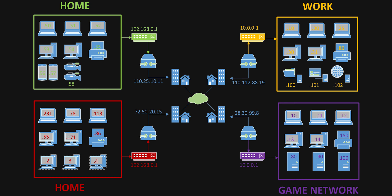Looking at the home network, we've also got a lot going on — smart devices, printers, laptops, desktops, and surveillance cameras, which people are putting in their homes more and more. Our surveillance cameras are on 192.168.0.50, so I'd set up a port forwarding rule in my router forwarding port 4000 to 192.168.0.58 on port 4000. So if I was at work and wanted to check my cameras and see what's going on in my front yard, I'd connect to 110.25.10.11 on port 4000.